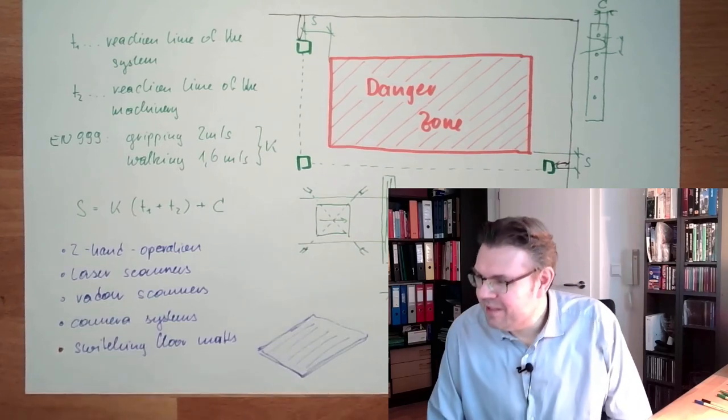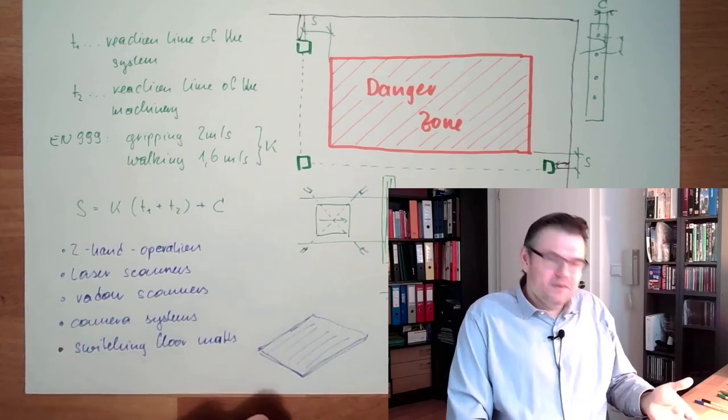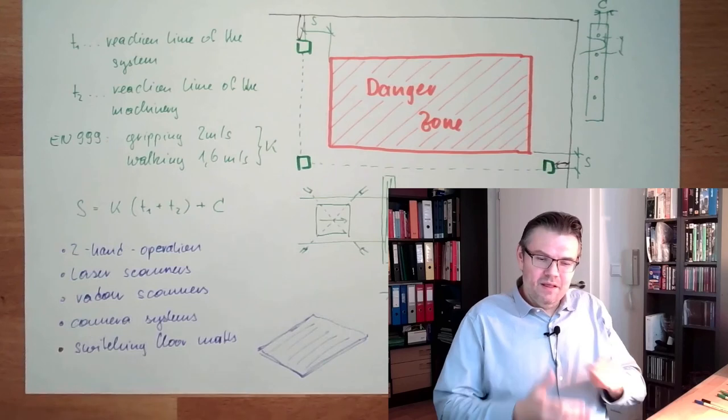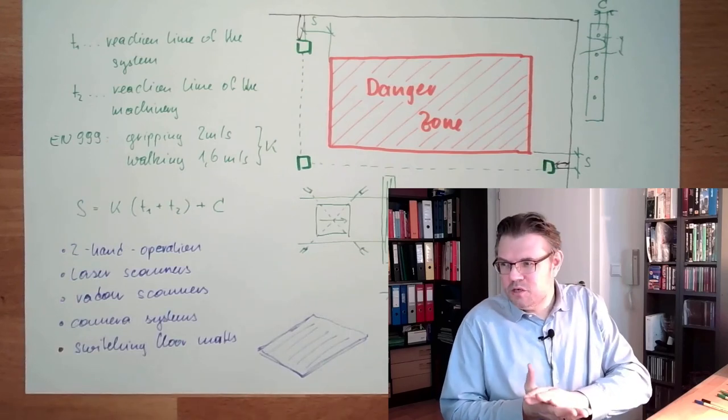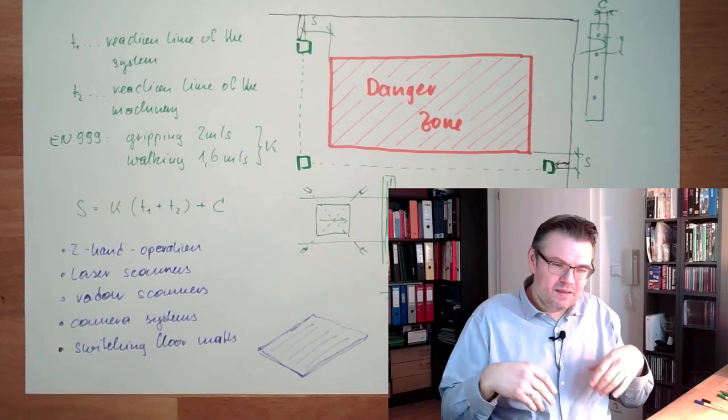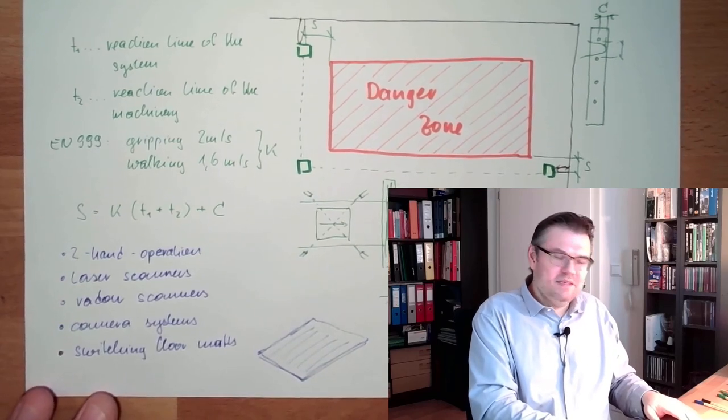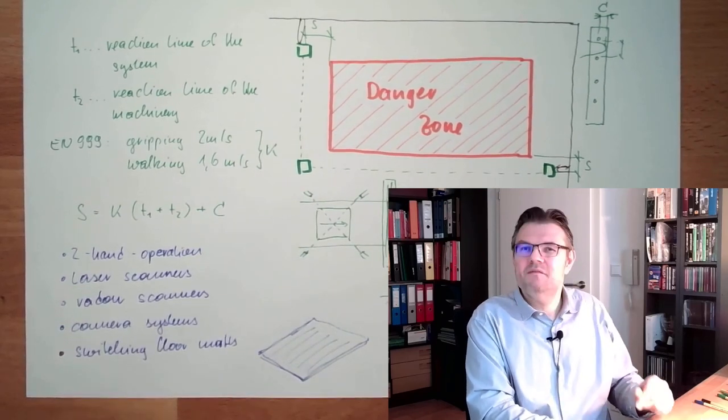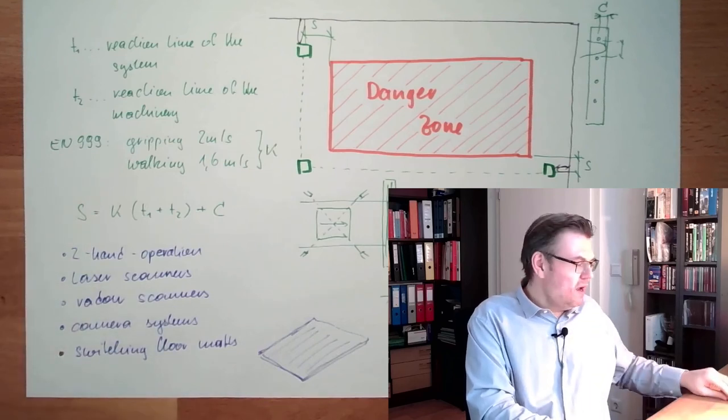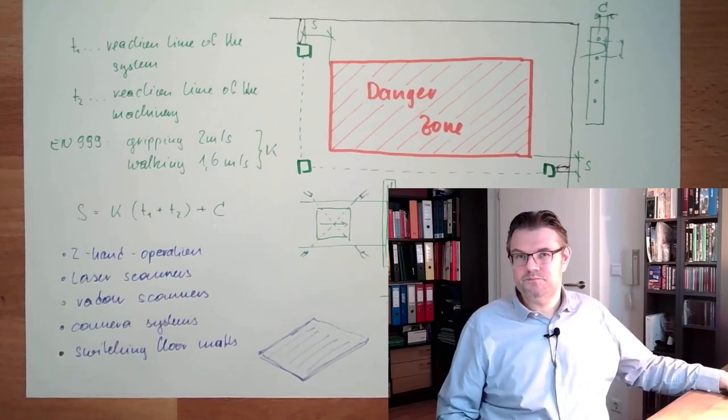Those mats, they do have some disadvantages. You know, some are not resistant to oil. Some who are resistant to oil, then they are quite stiff. And then they are not switching proper. And they might age and so on. So these switching floor mats, they are simply... You can use them, but other modern systems were invented for overcoming the issues of the switching floor mats.